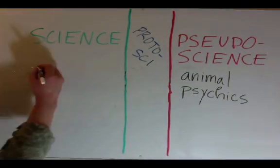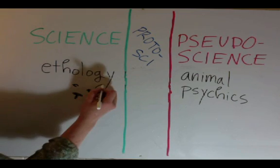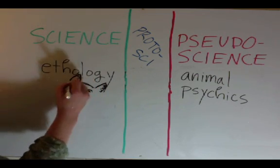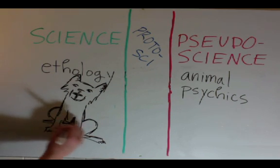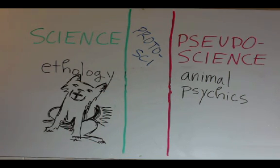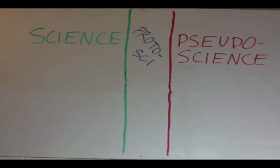Animal psychics are pseudoscience however ethology which is animal behavior is a real science and most animal psychics are just really good at reading the behavior of animals.